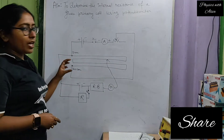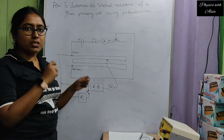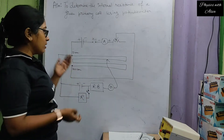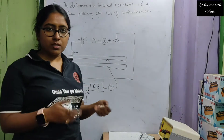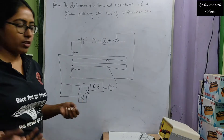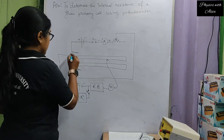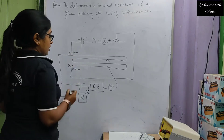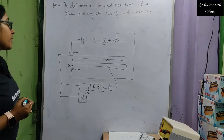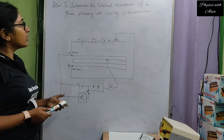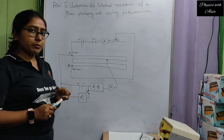This is the potentiometer. A potentiometer is a long resistance wire whose length can be 100 centimeters, 400 centimeters, or more. This is the potentiometer — this is the resistance wire — with terminal A at one end and terminal B at the other. Using this potentiometer, we will calculate the internal resistance of a battery or a primary cell.